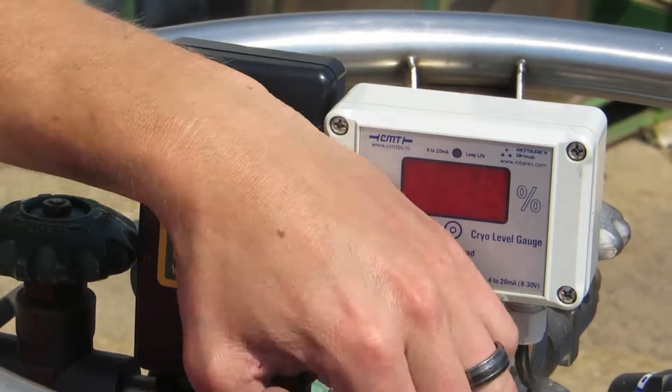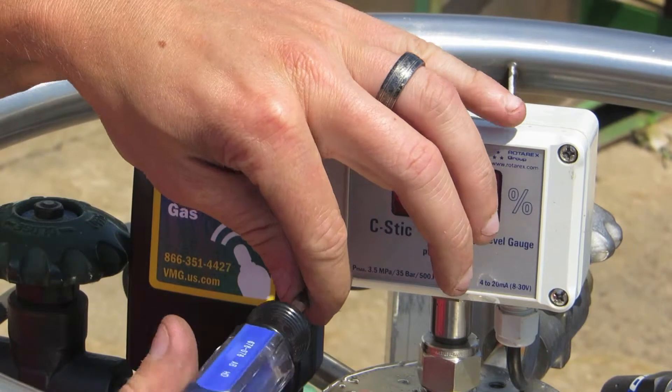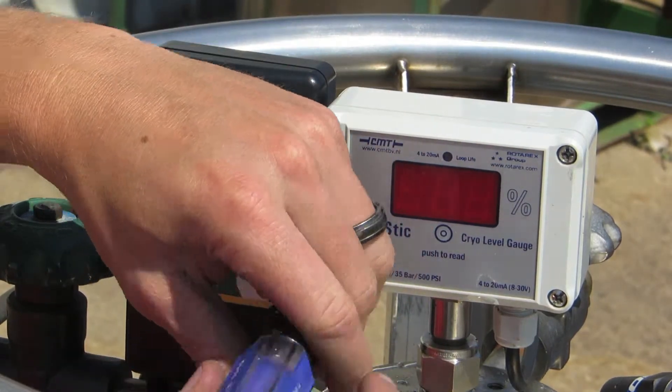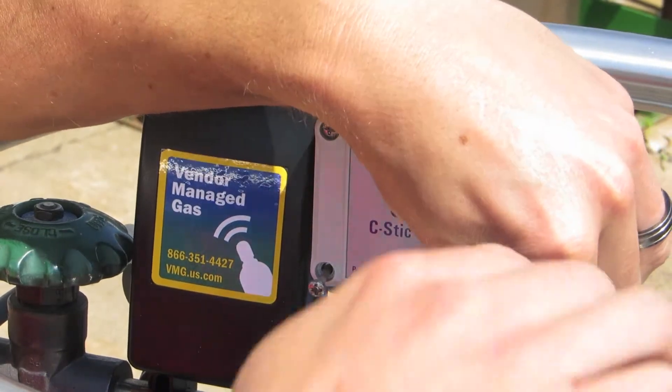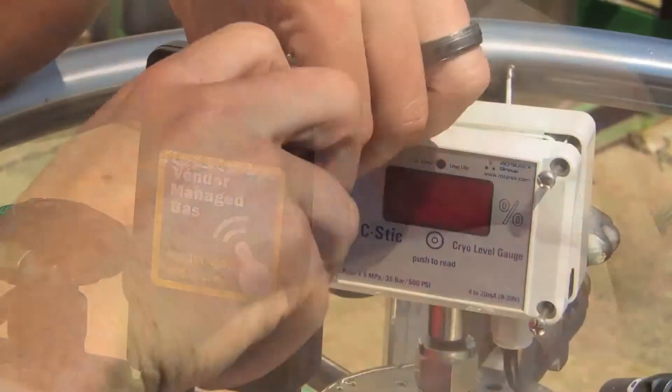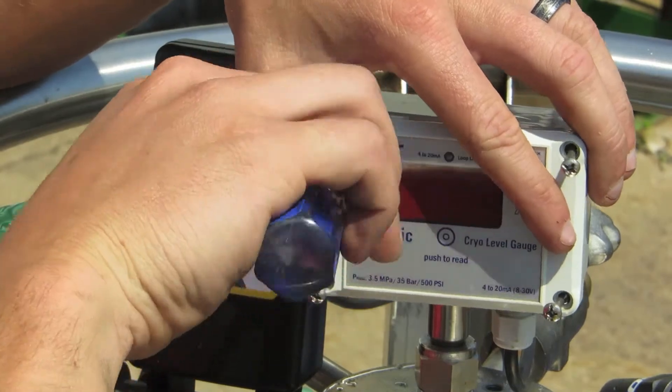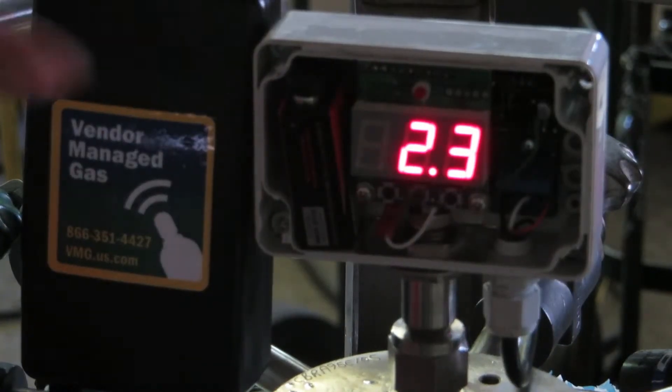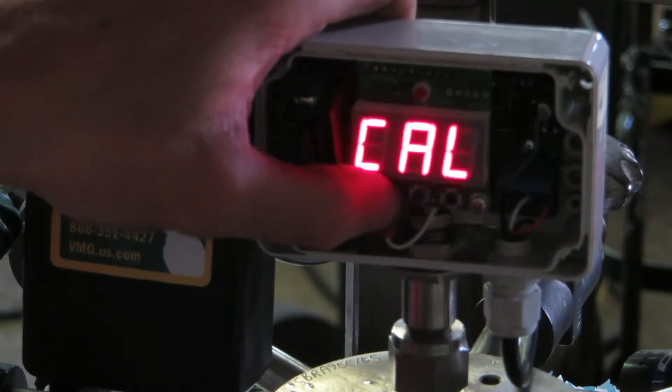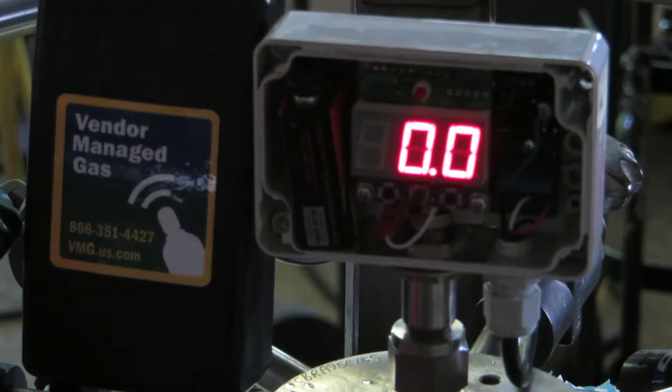So the last thing we're going to have to do here is just go ahead and calibrate that C-Stick head unit. Basically you need to tell it when it's empty and then after it's first fill you just need to tell it that it's full. That calibrates the C-Stick to read through the full range. So you just go ahead and remove the faceplate, push it on and then push the left button twice to calibrate low and then hit the center button to zero it out.